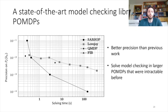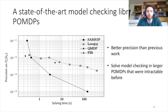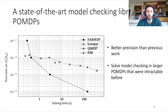Quantitatively, since we can benefit from any POMDP planner to solve this model checking problem, we can use powerful algorithms like SARSOP and gain several orders of magnitude compared to previous model checking work on POMDPs. Previous work used the Lovejoy algorithm, which relies on discretization of the belief space. Our methodology is agnostic to the underlying search algorithm, so we can test SARSOP, QMDP, FIB, or other POMDP algorithms. This plot shows that especially with SARSOP, we gain several orders of magnitude in solving time, and we are able to solve POMDPs that were intractable using previous algorithms.